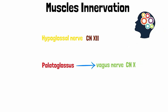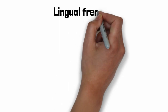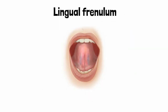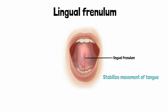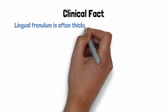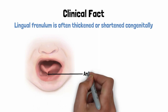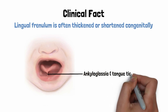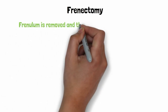The tongue itself is a very detailed topic because the taste glands and the origin and insertion of the muscles is in itself a vast topic that requires separate attention, which will be discussed in a later video. The tongue is attached to the floor of the mouth with a fold of tissue called the lingual frenulum, which helps in stabilizing the movements of the tongue. One important clinical feature is that the lingual frenulum is often thickened or shortened congenitally, resulting in a condition called ankyloglossia, or more commonly known as tongue tie. In this condition, the mobility of the tongue tip is restricted due to the thickened frenulum. The treatment of ankyloglossia is done by a procedure called frenectomy, in which the frenulum is removed and the tongue can then move freely.